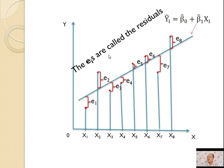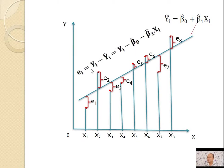The eᵢ's are called the residuals. So, residuals eᵢ = yᵢ − ŷᵢ, that is equal to yᵢ − β̂₀ − β̂₁xᵢ, because ŷᵢ = β̂₀ + β̂₁xᵢ.